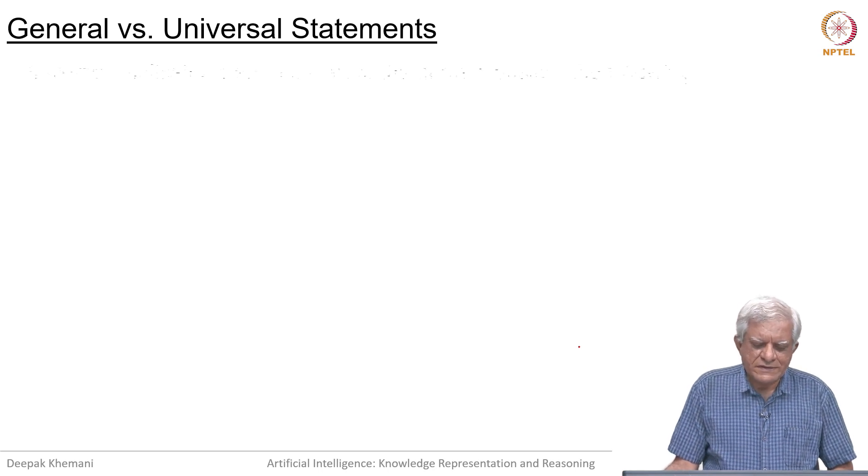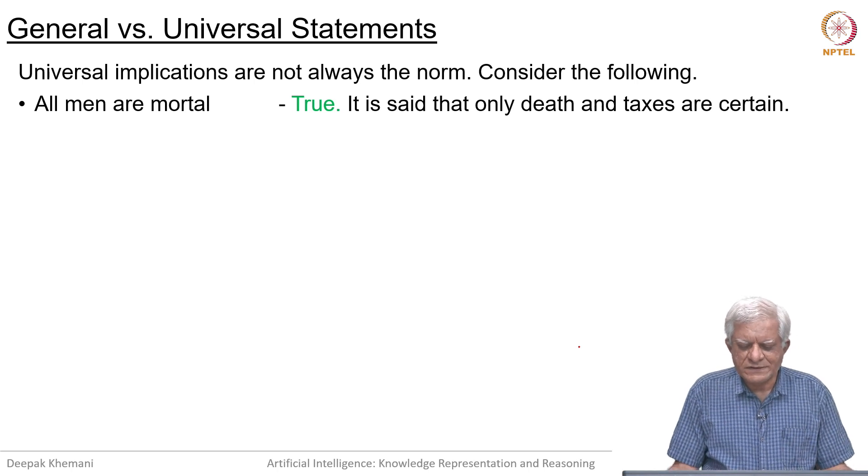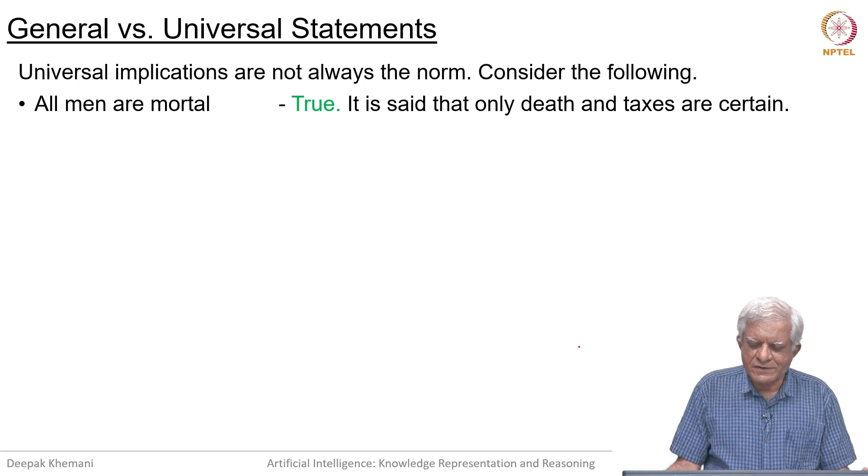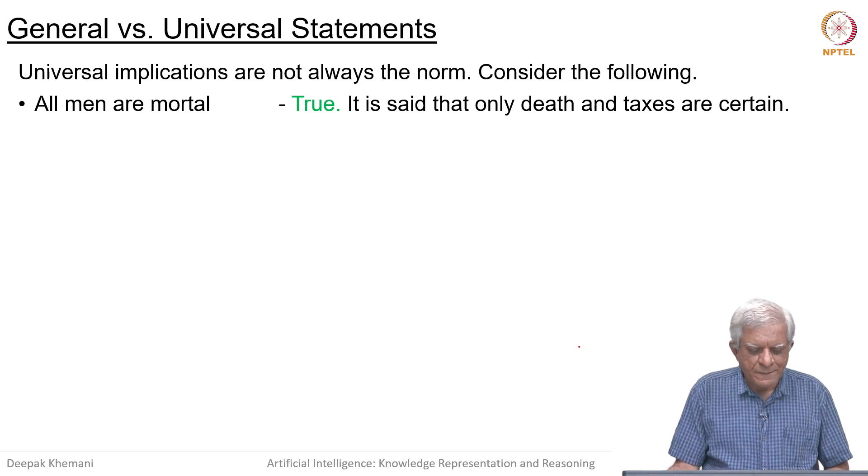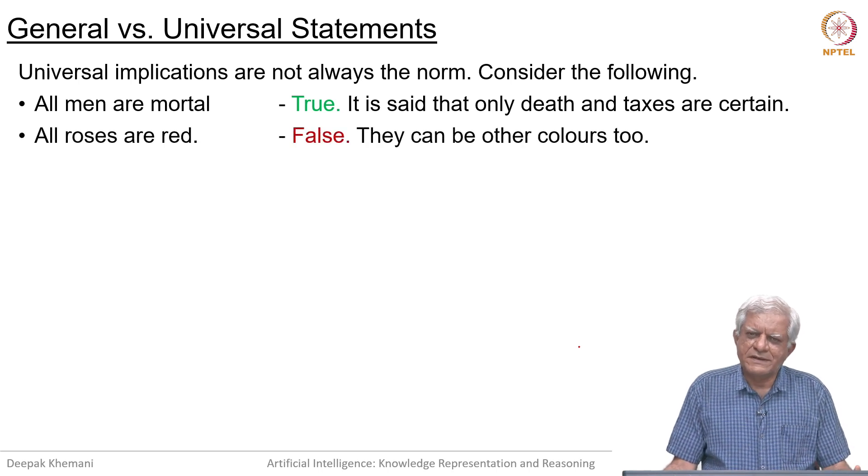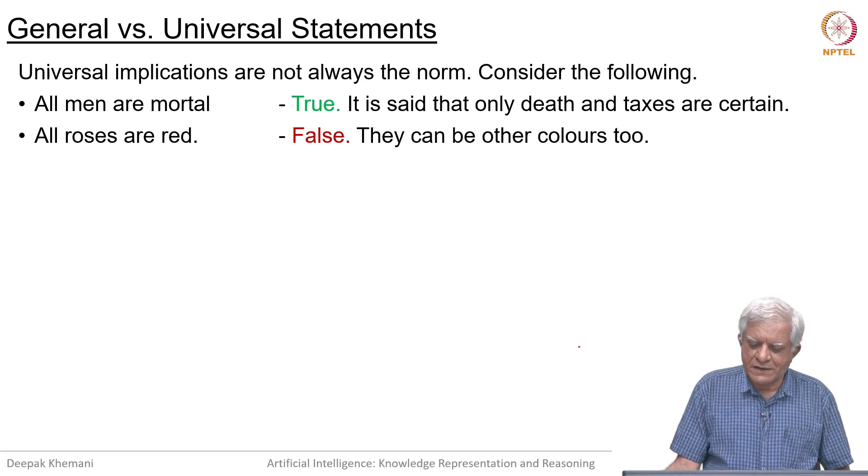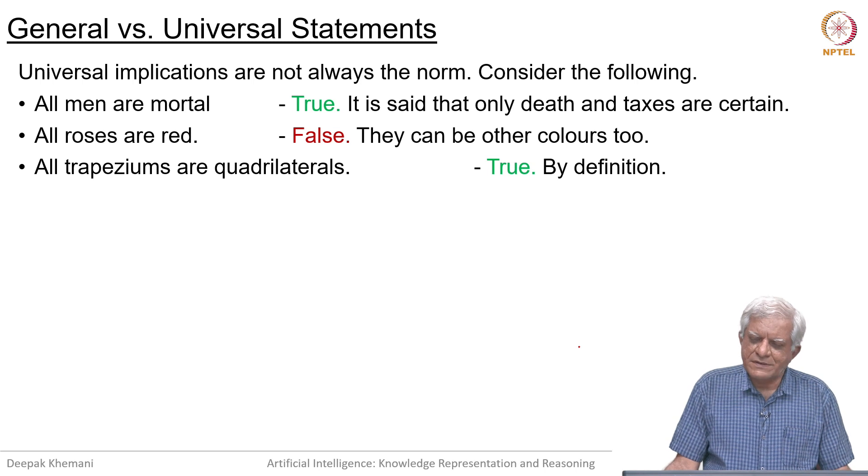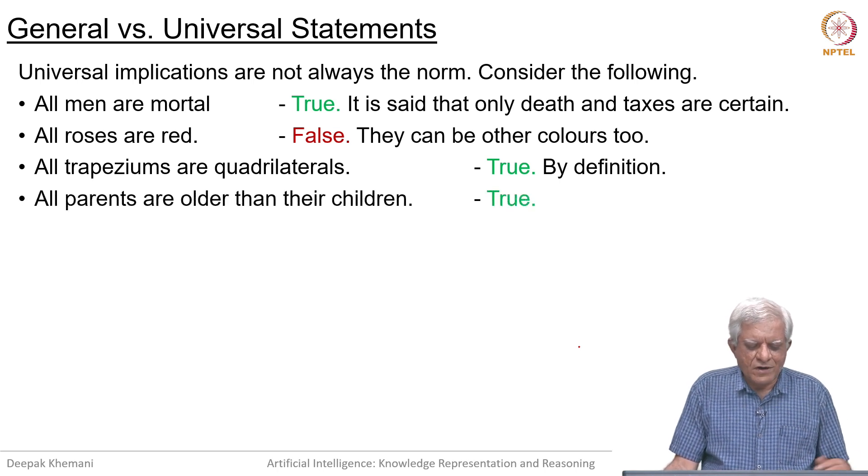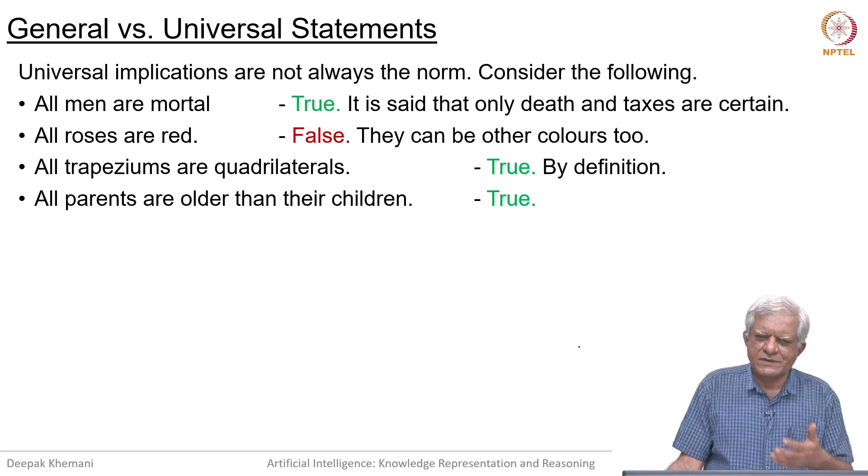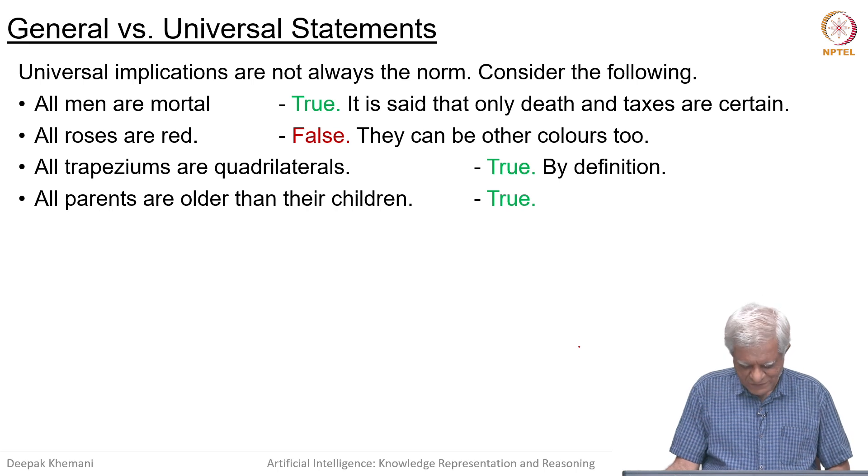Now to contrast general statements with universal statements, universal implications are not always the norm. Sometimes they are but not always. Consider the following: all men are mortal. Now that is true of course, because it is said that the only certainties are death and taxes. Everyone is destined to die. We might say all roses are red, but that is not a true statement because you can have roses of other colors too, white roses or pink roses or even black roses. We can say that all trapeziums are quadrilaterals, that is true, but that is by definition because geometry is something which we have invented. All parents are older than their children, that is also true and that is true because of the way procreation happens. You first have to be born and then you have a child later. Obviously, you will be older than your children.